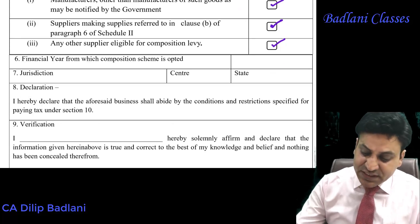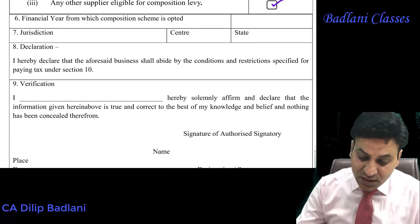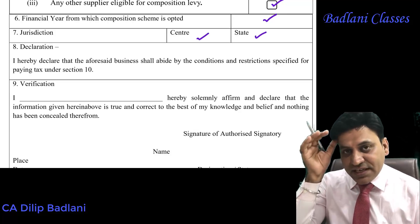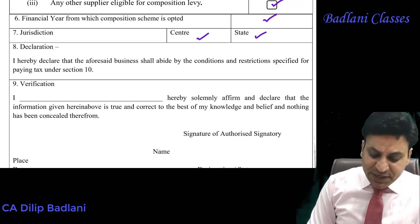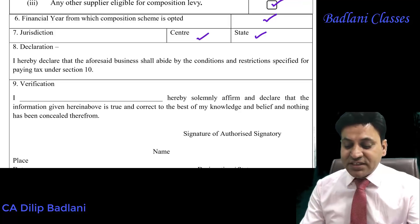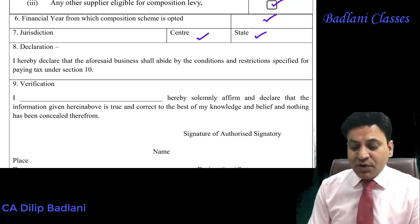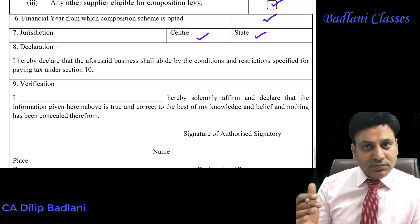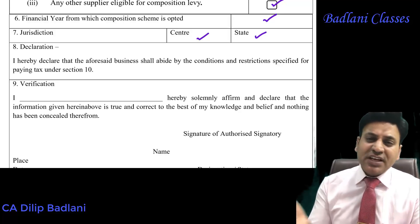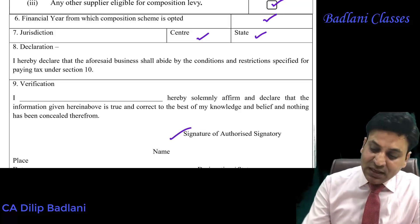इसके बाद financial year - जिस साल से आप यह scheme launch करना चाहते हैं वह देना पड़ेगा। यह है आपका center state jurisdiction कि आप किस area को cover करते हैं। उसके बाद एक simple declaration देना पड़ेगा: 'I hereby declare that the aforesaid business shall abide by the conditions and restrictions specified for paying tax under section 10.' And lastly you have to verify that all the information given by me is true to the best of my knowledge and belief and nothing has been concealed. Signature करना पड़ेगा - बात खतम।